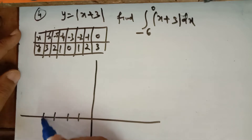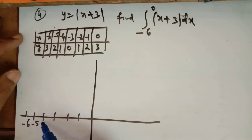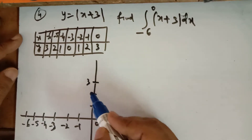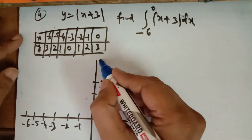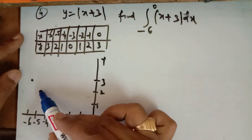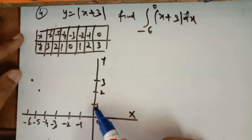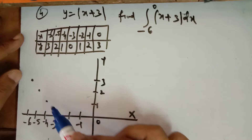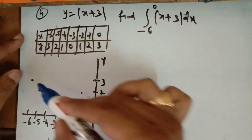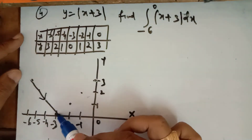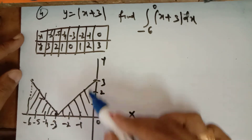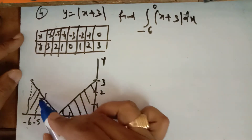Plotting these points on the axes from −6 to 0 on the x-axis with y values up to 3: the point at x = −6 gives y = 3, at x = −5 gives y = 2, at x = −4 gives y = 1, at x = −3 gives y = 0, and then it increases back. The graph is first decreasing and then increasing — it is a V-shape with vertex at (−3, 0).